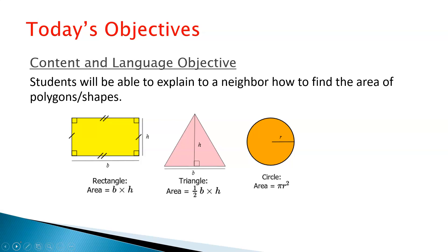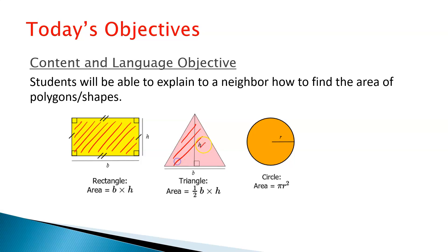First of all, what is area? When you find area, when you calculate area, what are you actually finding? What does area represent? It represents the space inside. So the space inside of this rectangle — how much space inside do we have to walk around? Same thing for the area of a triangle. How much space is there inside to walk around on? And then same thing for a circle. How much space is inside? So that is what area is, and we're going to be focusing on these three shapes: a rectangle, a triangle, and a circle.